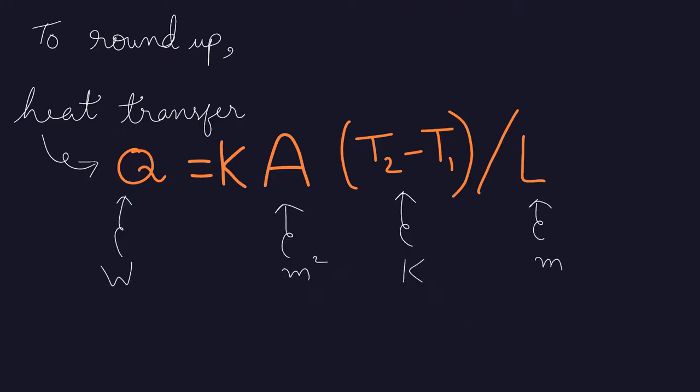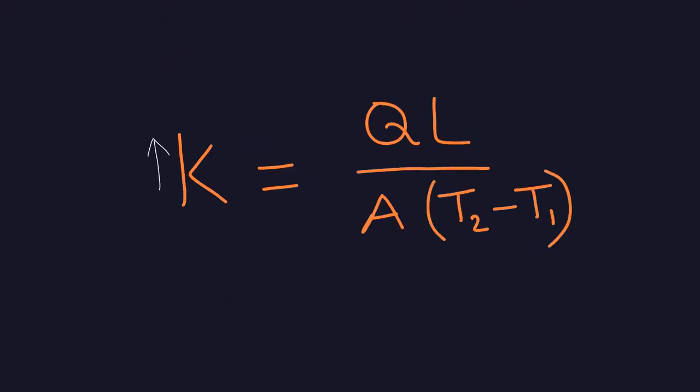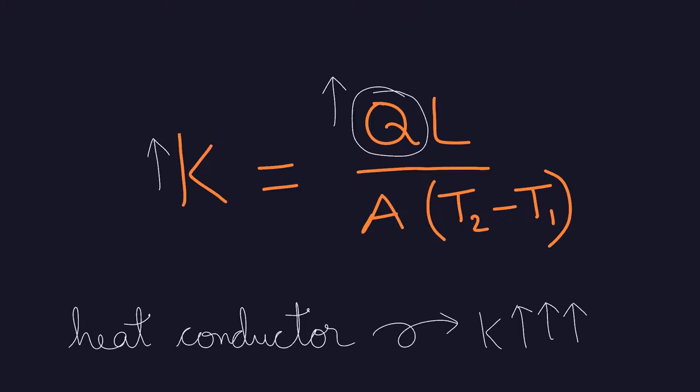From dimensional analysis, the units of coefficient of thermal conductivity is Watt per meter Kelvin. If this number is bigger, then you can see from the numerator that heat transfer rate will be more. So, for better heat conductors, the value is higher.